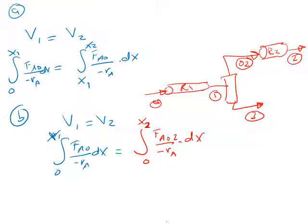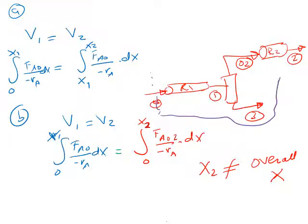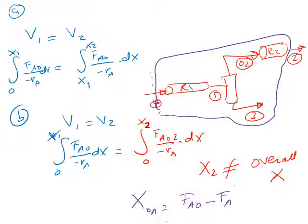Go ahead and solve this problem. And also don't forget to calculate the overall conversion in this case, because here X2 is not the overall conversion. What is it then? Well, you already remember how to calculate the overall conversion. So in this case, the overall conversion would be moles converted in the whole system, which you can calculate it from FA naught minus FA2 divided by FA naught. I'll leave you with the solution.